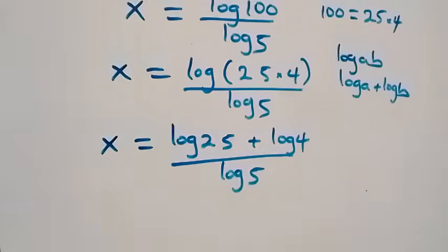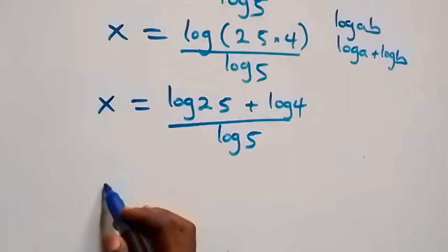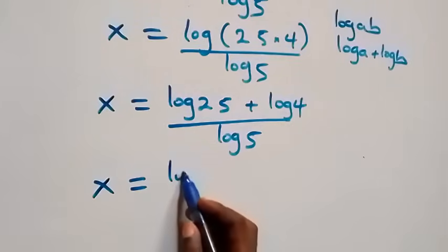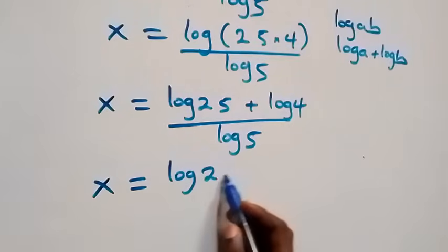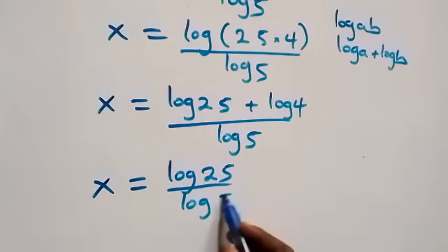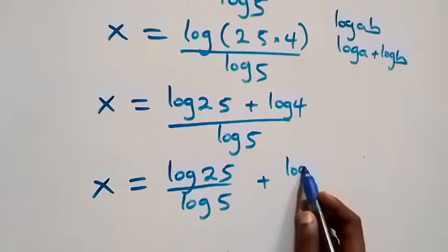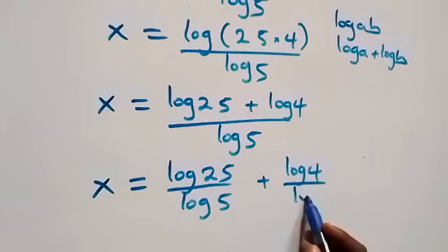The next step here, we separate this into two fractions and we have x equals to log 25 over log 5, then plus log 4 over log 5.